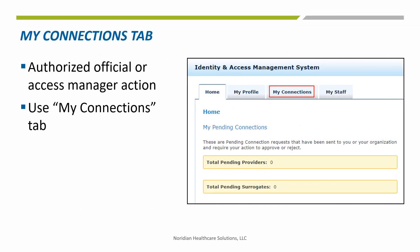Surrogacy requests are normally made by an authorized official or access manager. To make the surrogacy request, log into Identity and Access and navigate to the My Connections tab.